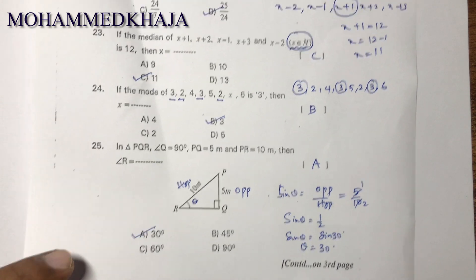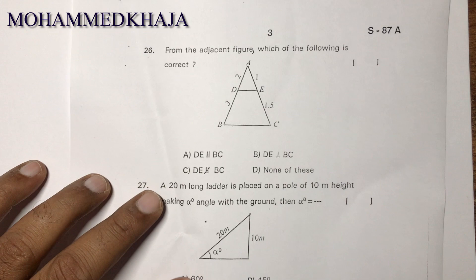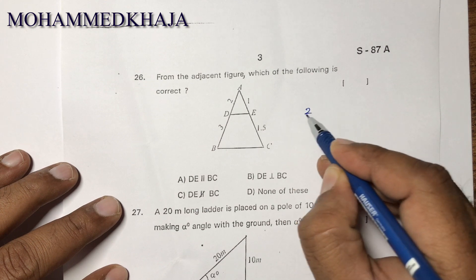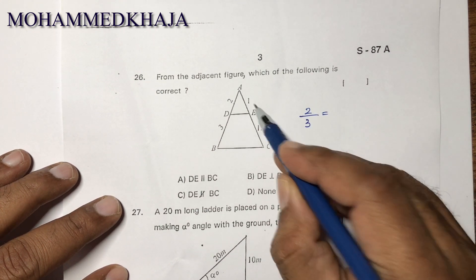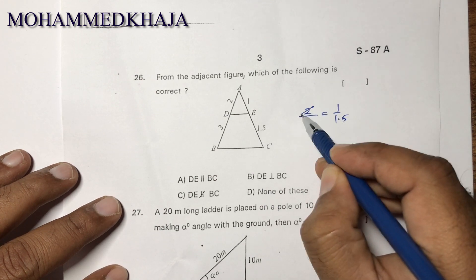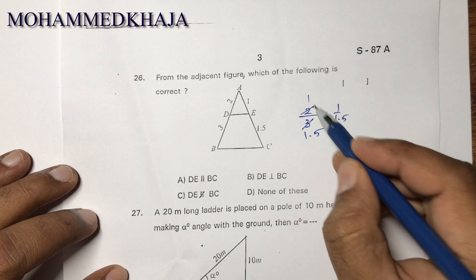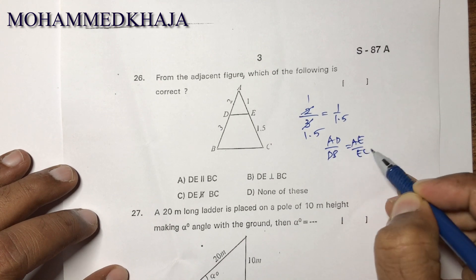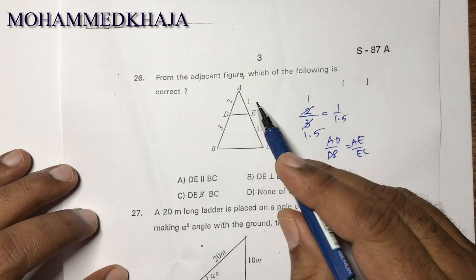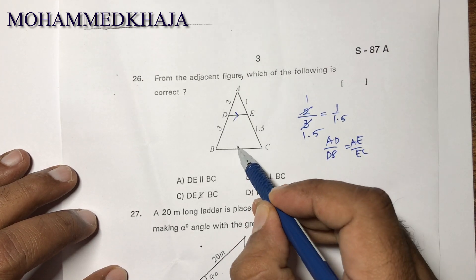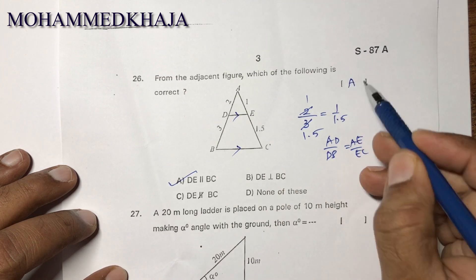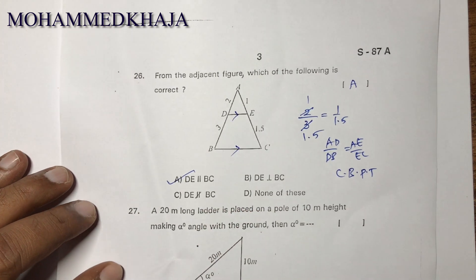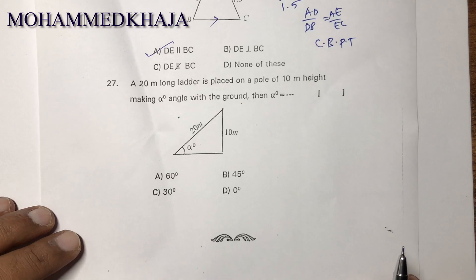From the adjacent figure, checking the ratios: AD/DB equals AE/EC, both giving 2 by 3. Since the ratios are equal, by the Converse of the Basic Proportionality Theorem (BPT), DE is parallel to BC. The correct option is A, because if a line divides two sides of a triangle in the same ratio, it is parallel to the third side.